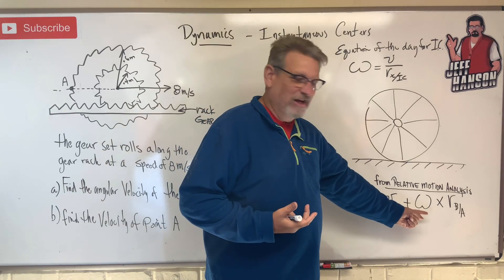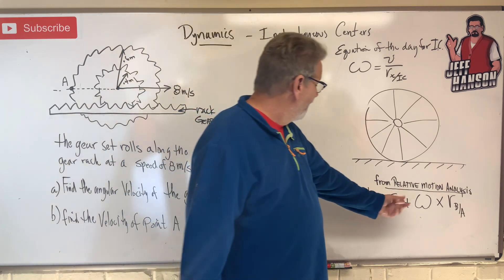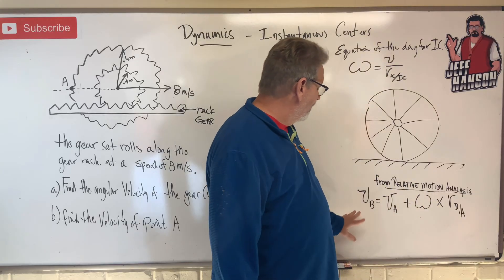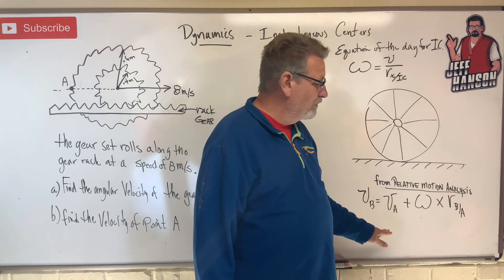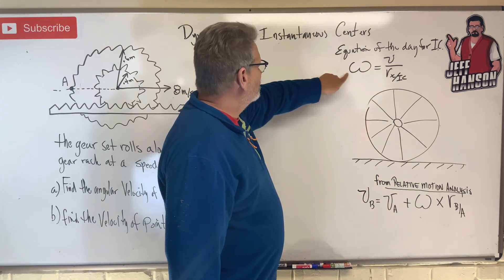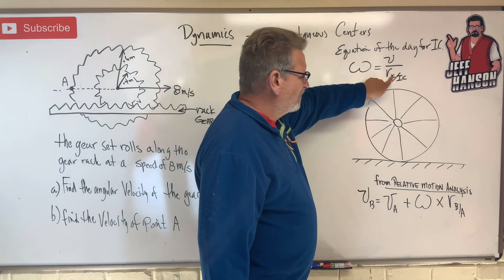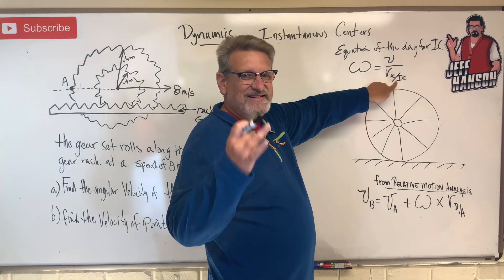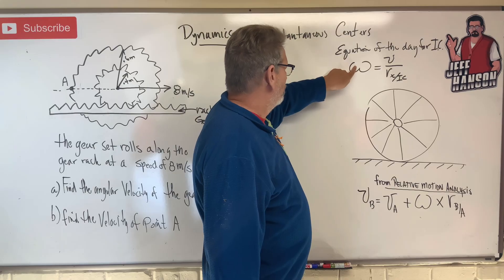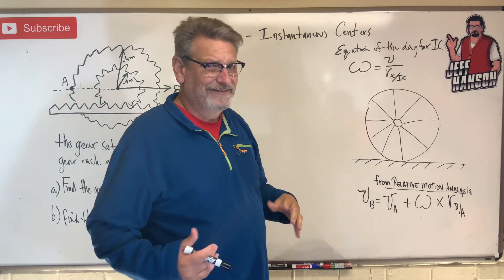You had angular velocity - remember omega, which my students call 'booty,' I don't know why. Anyway, omega cross r - remember that equation from relative motion? We've got a new equation for instantaneous centers. The equation is omega equals v divided by r with respect to the instantaneous center, wherever that is. So that's going to be 'booty over virtual reality,' VR. Can you remember that?